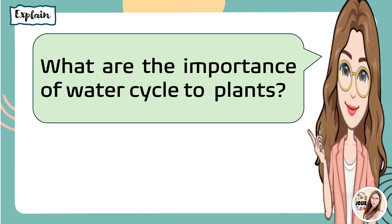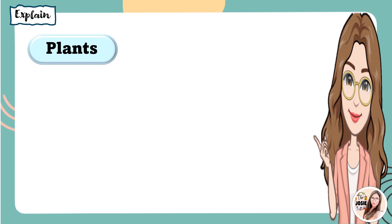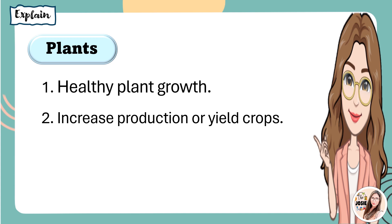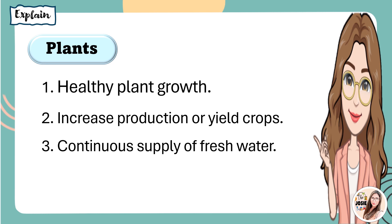What are the importance of the water cycle to plants? You're right. To plants, it helps the plant to grow healthy — healthy plant growth and the development of plants. Second, it increases production or yield of crops. And lastly, it provides a continuous supply of fresh water. So, if there is enough water for plants, they will grow healthy.